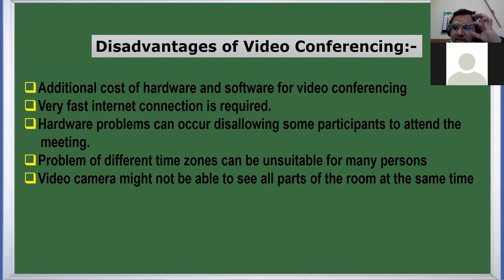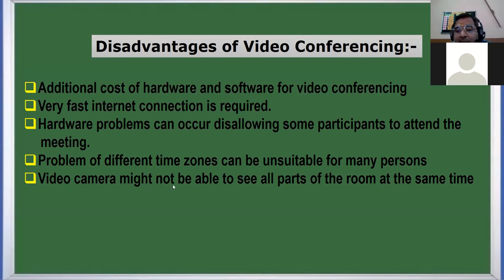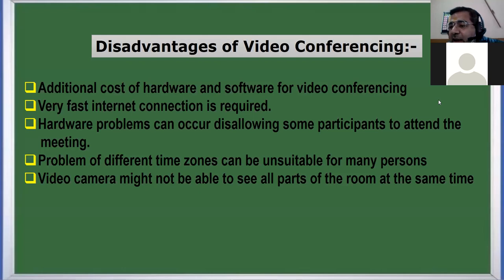Another disadvantage is the problem of different time zones. Canada has a different time, America has a different time, India has a different time. When it is day here, it may be night in America, so the time difference can be a hindrance to a successful meeting. Also, the video camera might not be able to see all parts of the room — right now I can only view four students at a time and have to scroll through to see other members.